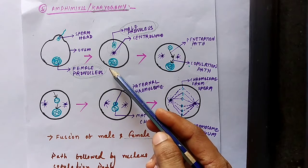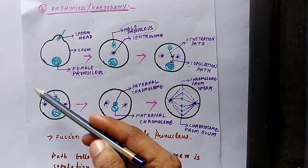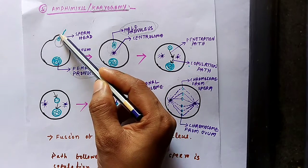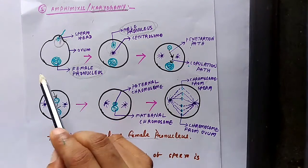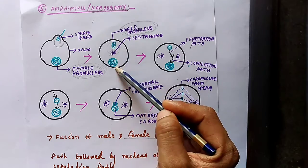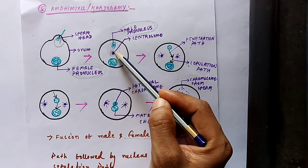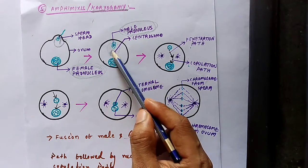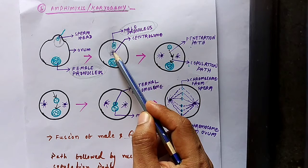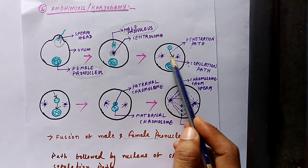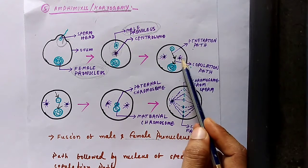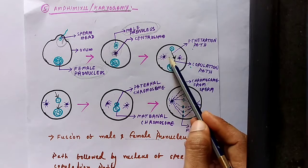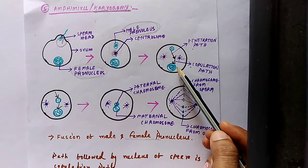After the entry of sperm into the ovum, the sperm rotates at an angle of 180 degrees. As a result, the centriole remains in between the two gametic nuclei — that is, in between the male pronucleus and female pronucleus. The centriole then starts dividing and migrates to two opposite poles, forming spindle fibers that help in the cell division process.